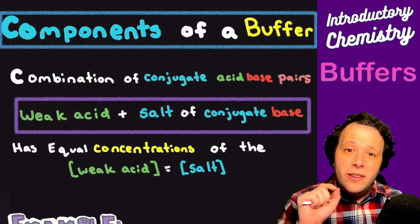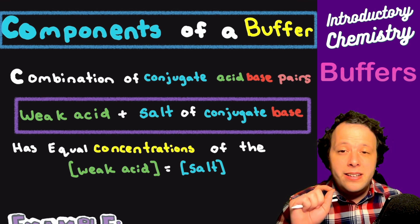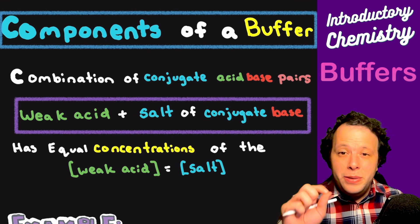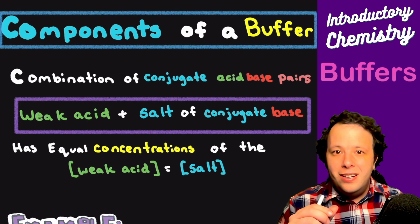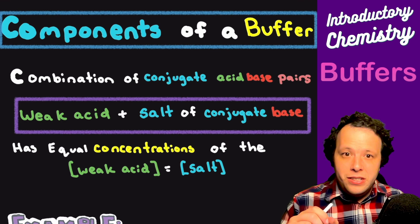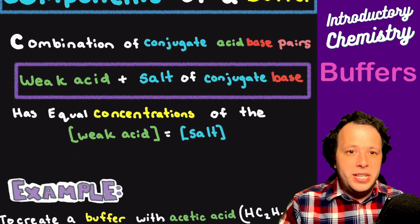The whole idea of the different components of a buffer: as I said before, it has to be the conjugate acid-base pair. Generally we take a weak acid and combine it with the salt of its conjugate base, and they have to be in equal concentrations. Let's take a look at what that represents through an example.